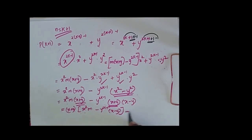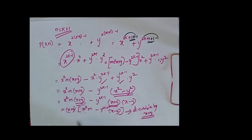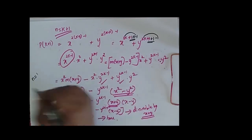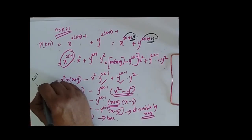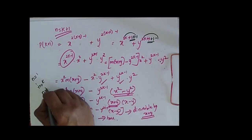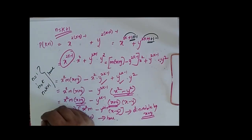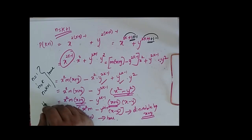So purely it is divisible by x plus y. So for P of k plus 1 it is true. Now we have proved: for n equal to 1 it is true, n equal to k it is true, and n equal to k plus 1 it is true. Hence it is true for all values of n greater than or equal to 1.